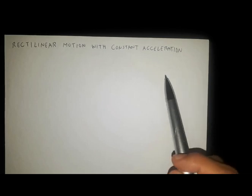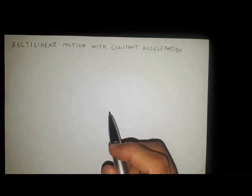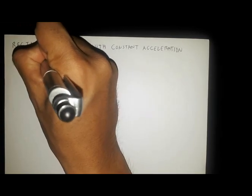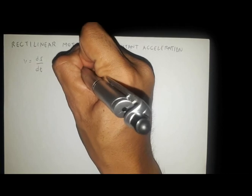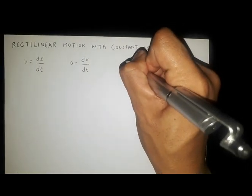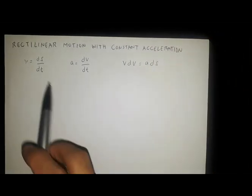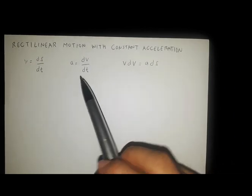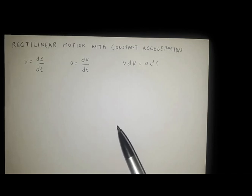With respect to the change in position, let us recall that we have the following differential kinematic equations of motion. We have v equals ds/dt, we also have acceleration as a function of time: a equals dv/dt, and we have v dv equals a ds. From these three differential kinematic equations, we can derive the formulas for rectilinear motion with constant acceleration.